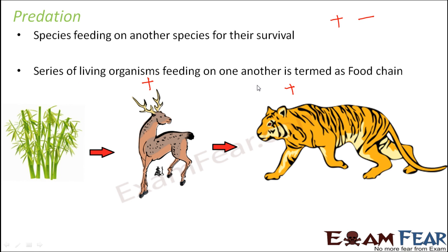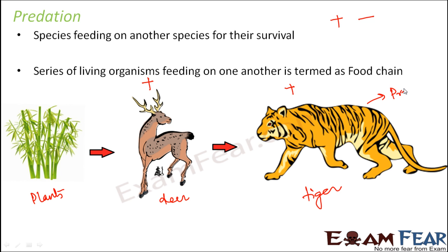This series of living organisms where one organism feeds on another is termed a food chain. On the screen you can see an example: plants are eaten up by deer, which in turn are eaten up by a tiger. The organism which feeds on the other is called the predator, and the organism on which it feeds is termed the prey. So the predator benefits and the prey is harmed.